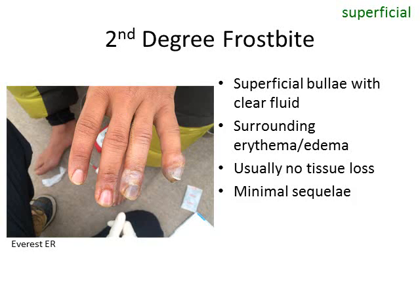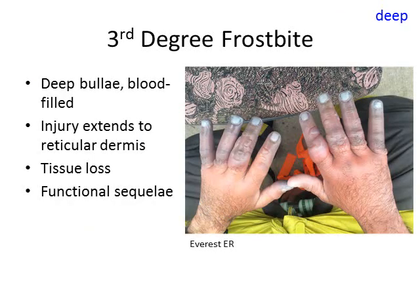In this photograph you can see second degree frostbite to the tops of the fourth and fifth digits. This is still a superficial frostbite with superficial bullae containing clear fluid and surrounding erythema and edema. Third degree frostbite is considered deep frostbite, with deep bullae that are blood-filled. This injury extends to the reticular dermis, and there is considerable tissue loss and functional sequelae.